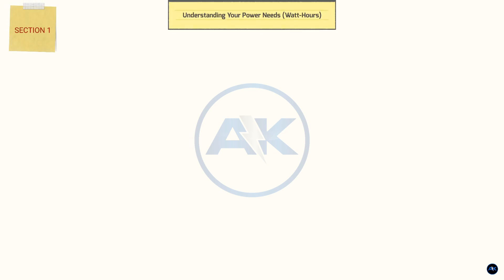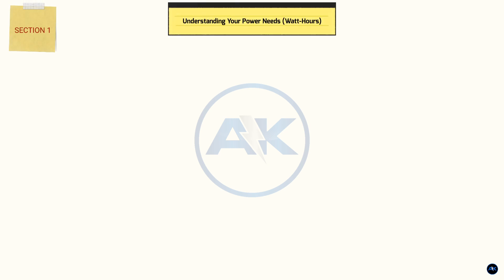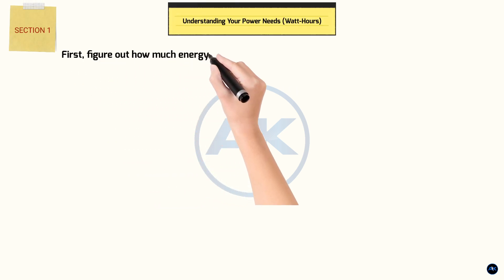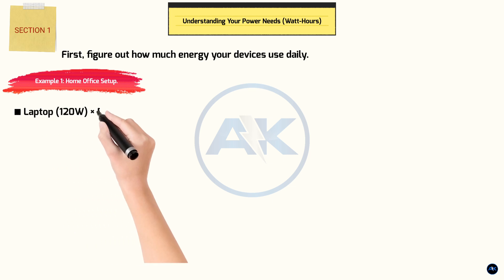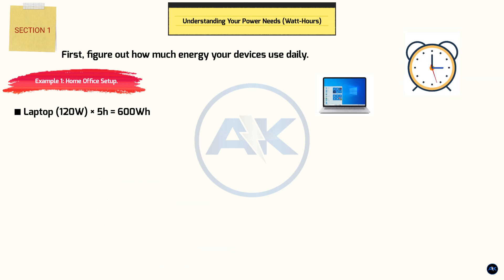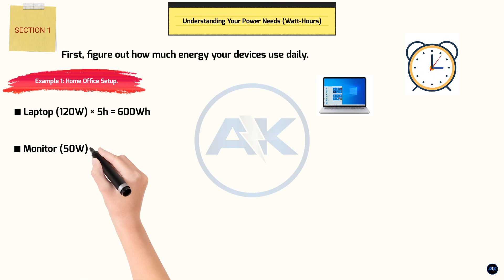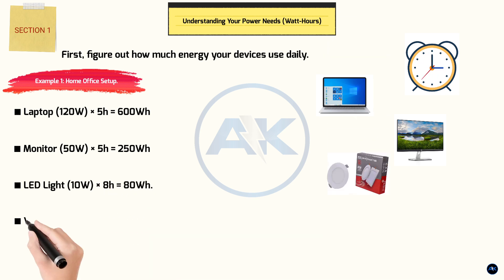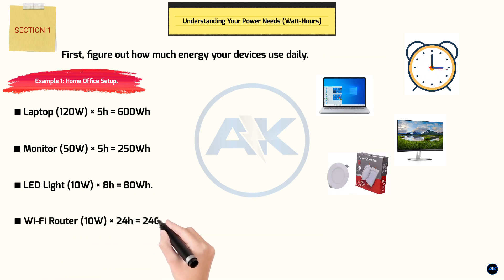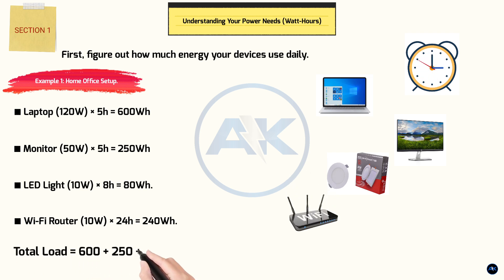Section 1: Understanding your power needs — watt hours. First, figure out how much energy your devices use daily. Example 1: Home office setup. Laptop: 120 watts × 5 hours = 600 watt-hours. Monitor: 50 watts × 5 hours = 250 watt-hours. LED light: 10 watts × 8 hours = 80 watt-hours. Wi-Fi router: 10 watts × 24 hours = 240 watt-hours. Total: 600 + 250 + 80 + 240 = 1,170 watt-hours per day.